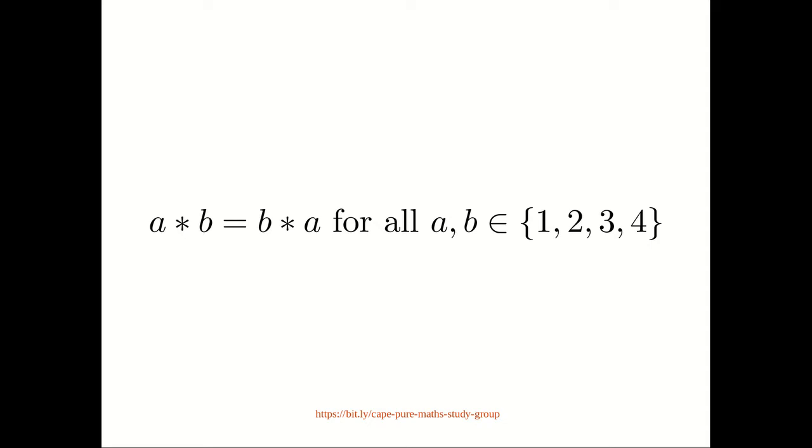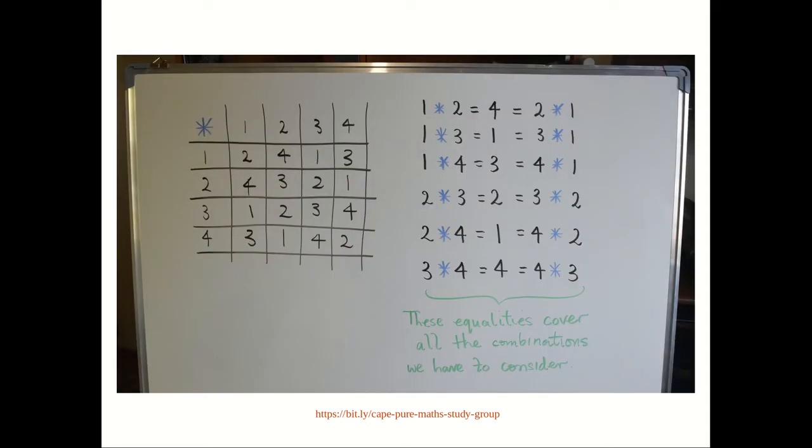Now since the set on which star is defined is finite, and it only contains 4 elements, we can get away with a proof by exhaustion. Here's the proof.